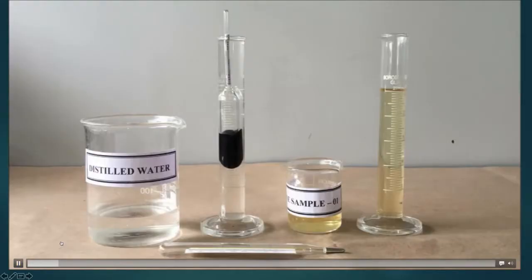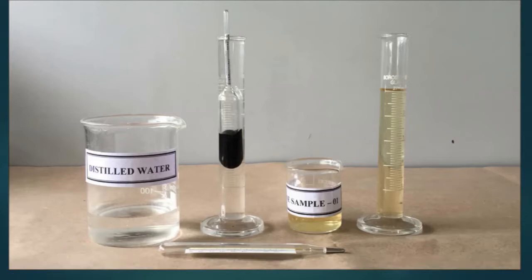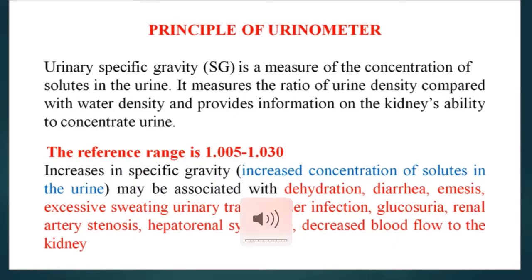Materials required include a container of 52–100 ml of distilled water, a 25 ml measuring cylinder, one to two urinometers, and a urine sample. The principle of the urinometer is very simple — the specific gravity of water is about 1.000, and we cross-check the specific gravity of urine against this. In disease conditions, the specific gravity of urine may be increased or decreased.